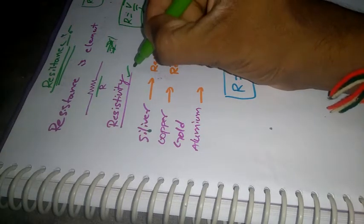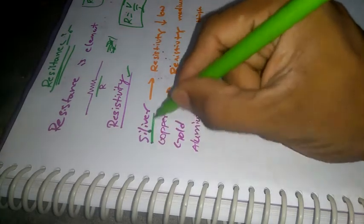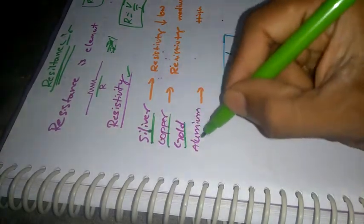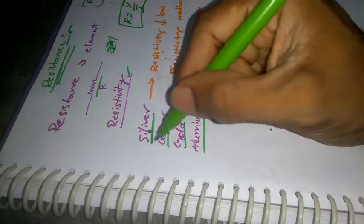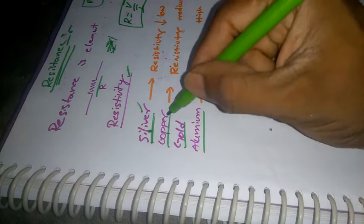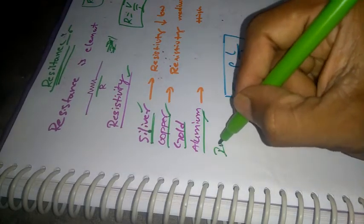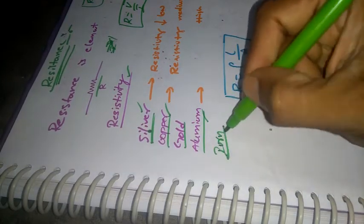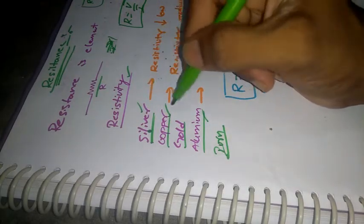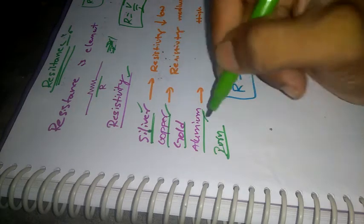Some materials have this property. So silver, copper, gold, aluminum — metals are easy to use. So copper is easy to use, and this is the reason why.